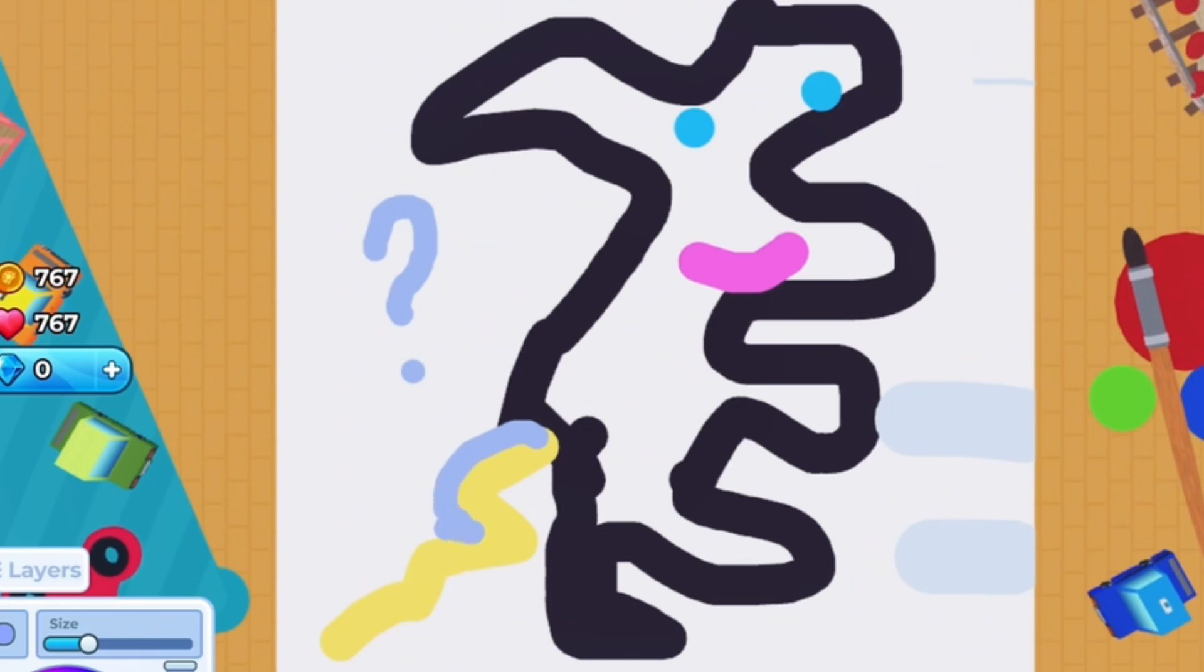I'm just gonna draw the pattern. Not the pattern, but like just gonna put colors on the tail like this. Yeah, I'm just gonna do this. I don't know what to draw here.